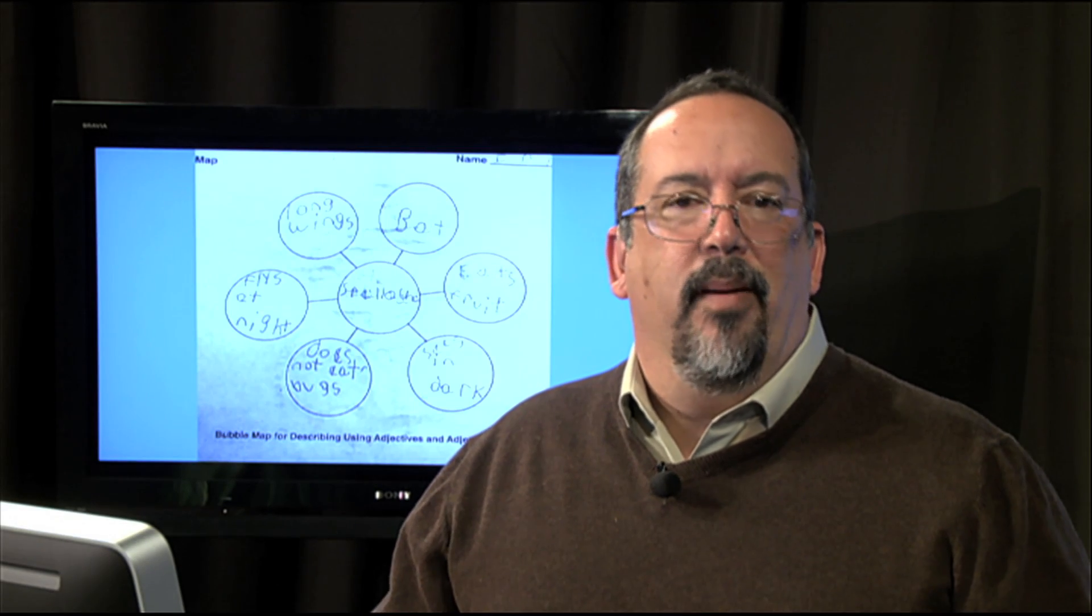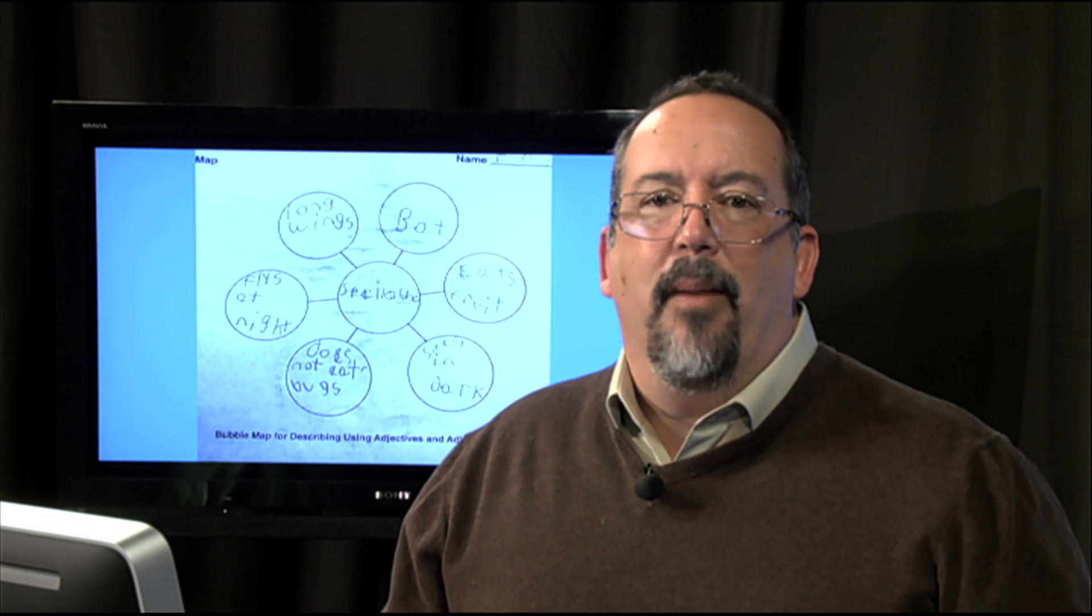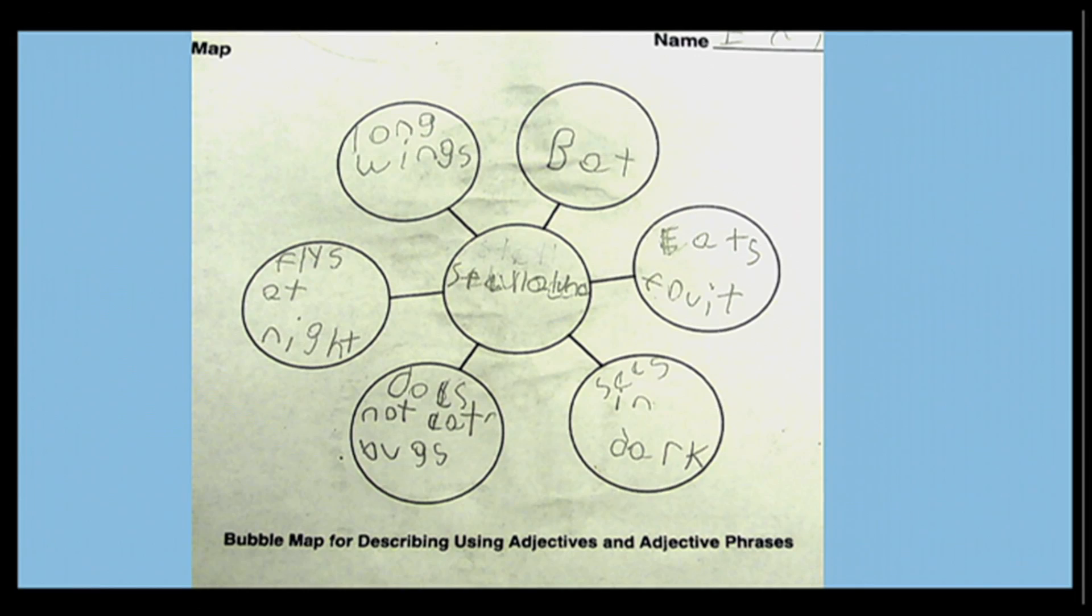If everybody remembers what Stellaluna was, it's a story about a bat. You can see back here on this that the student in each one of those bubbles would fill in some description of what Stellaluna was. She can see in the dark,